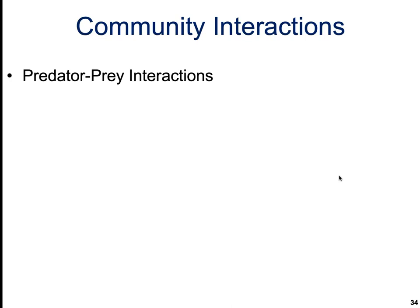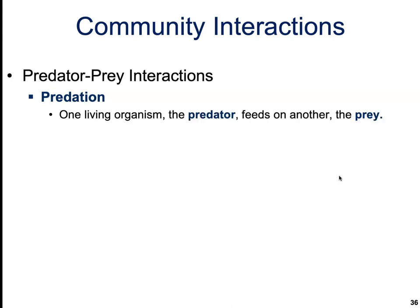Another type of community interaction is predator-prey interactions. Predation is when one living organism, the predator, feeds on another, the prey. This includes everything from predacious lions hunting and killing zebras, to herbivorous deer that feed on vegetation. Deer feed on grasses, leaves, and trees, which makes those plants the prey and the deer the predators. Parasitism is also considered a type of predation since the parasite feeds off another species, and parasitoids are organisms that lay their eggs inside their hosts.